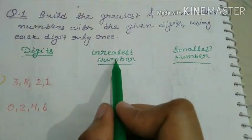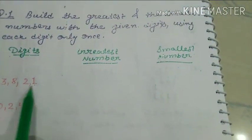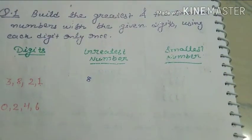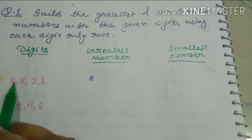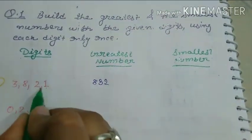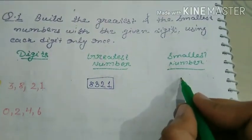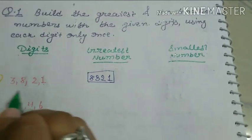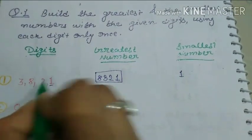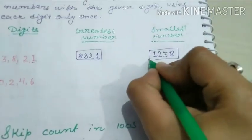To find the greatest number, we arrange in descending order: the greatest digit is 8, then 3, then 2, then 1. So the greatest number is 8321. For the smallest number, arrange in ascending order: 1, 2, 3, 8 — so the smallest number is 1238.